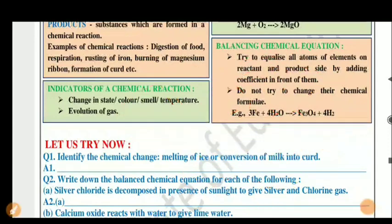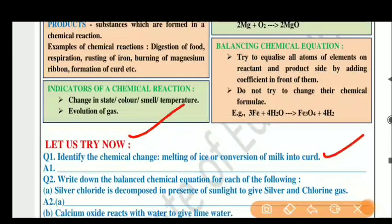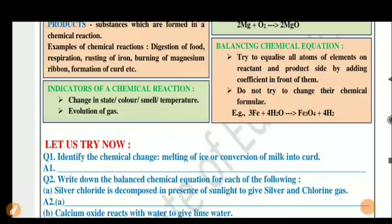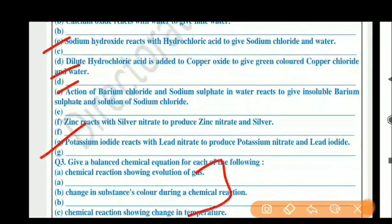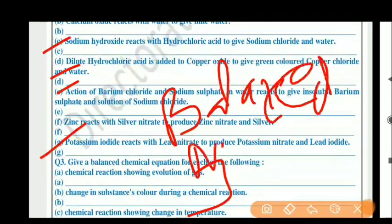Let's look at the questions. Question 1: Identify the chemical change — melting of ice, or conversion of milk into curd. Question 2: Write the following statements as chemical equations. The sub-parts are c, d, e, and g — write the equation for each. Question 3: Write a balanced chemical equation with conditions for the given reactions. Balance means the number of reactant atoms should be equal to the number of product atoms. Let us discuss all the solutions.